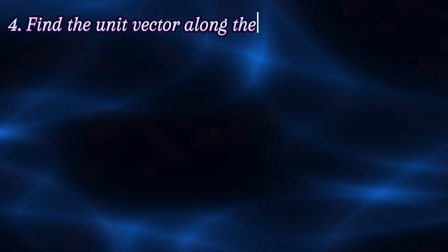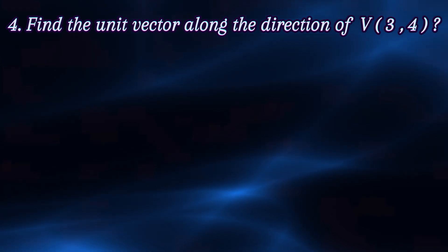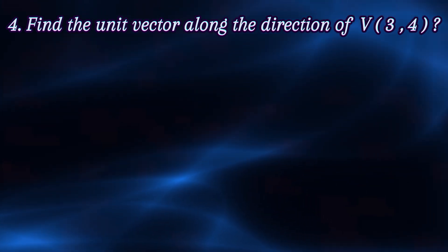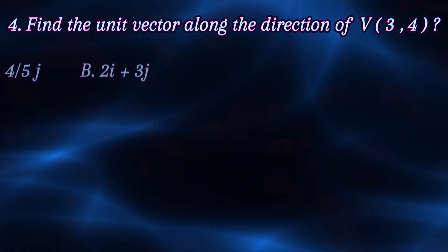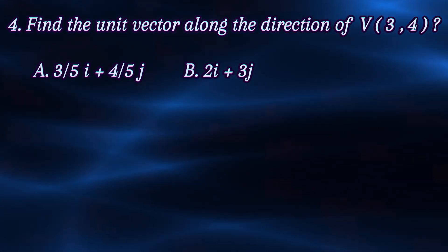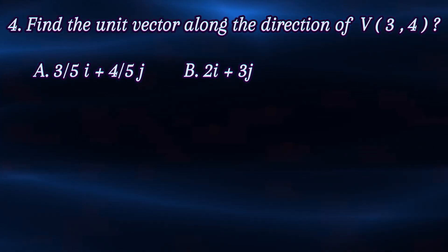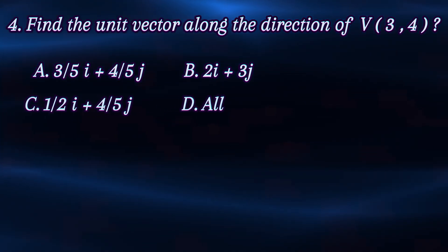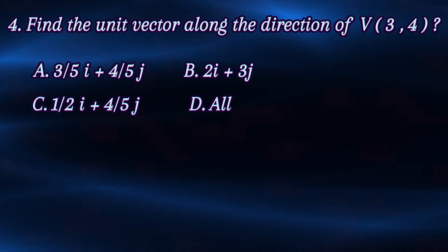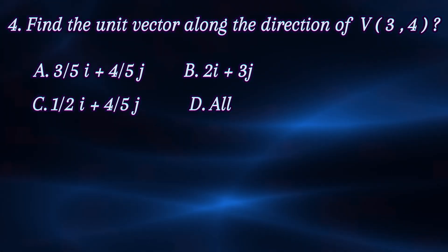Find the unit vector along the direction of v equals (3,4). The answer choices are: a) 3 over 5 i plus 4 over 5 j, b) 2i plus 3j, c) 1 over 2 i plus 4 over 5 j, d) all 9.